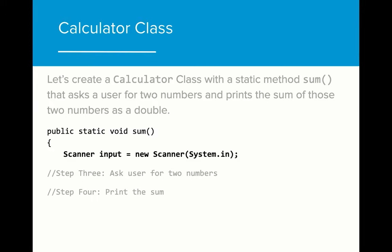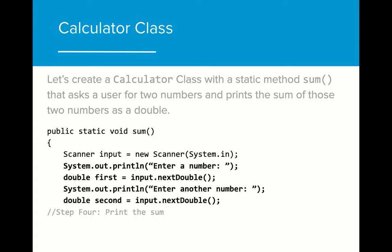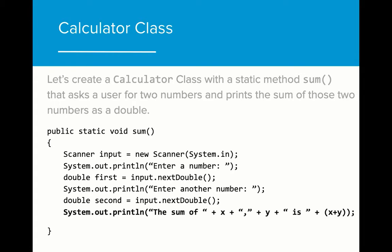Next, we need to create a scanner to take user input. Using that scanner, we want to take two values from the user that we will eventually sum together. And finally, we can print out the results of that sum with a string that describes what two values are being added and the eventual result.